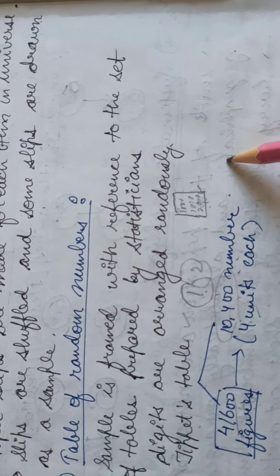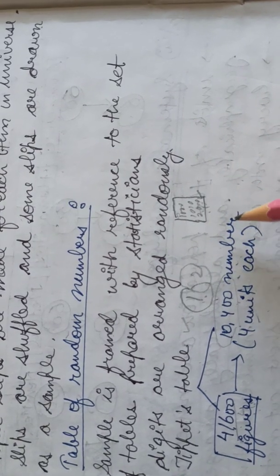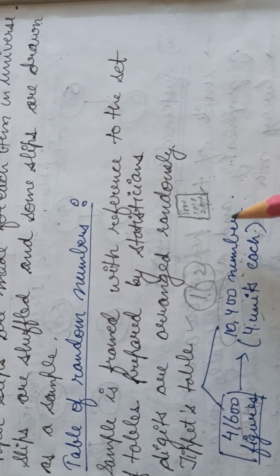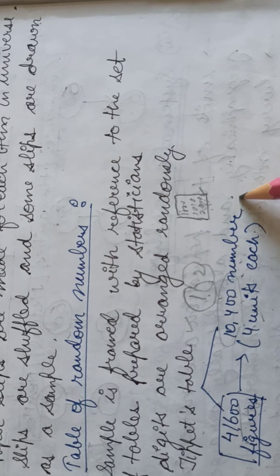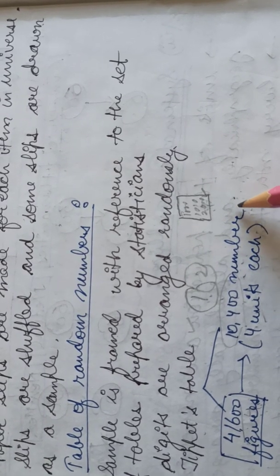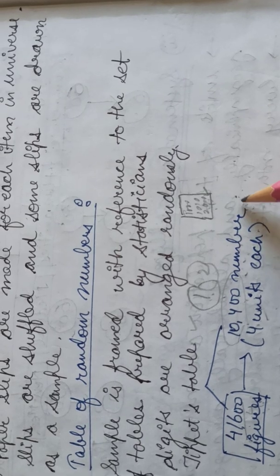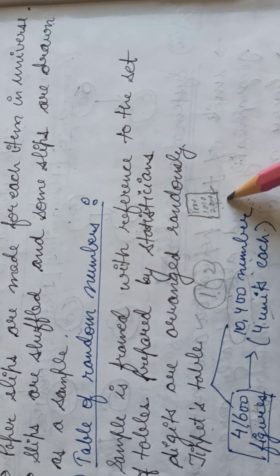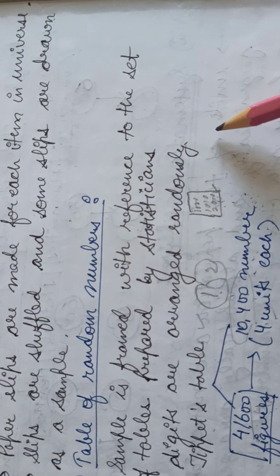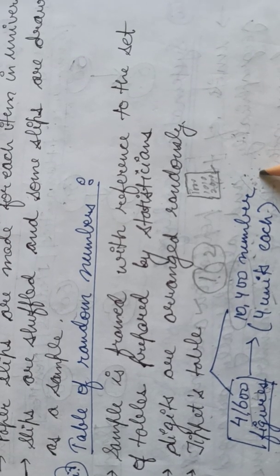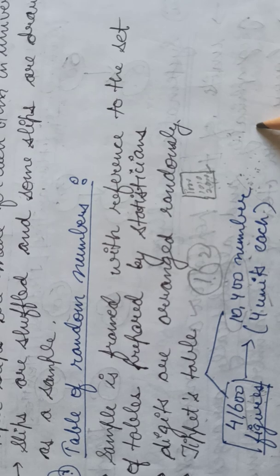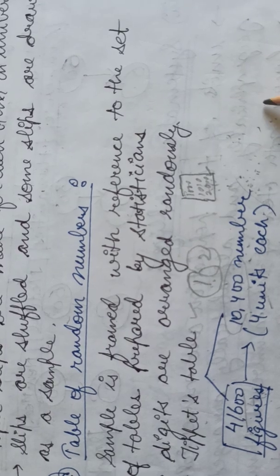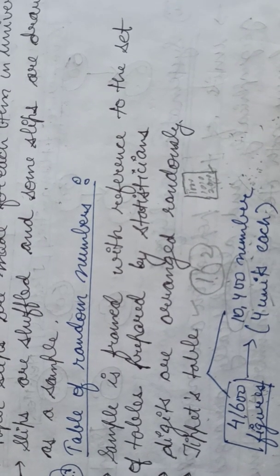This was all about random sampling, in which each and every item of the universe has an equal chance of being selected in the sample. Therefore, this method is also impartial. It is used when items of the universe are of homogeneous nature, and two methods come under it: the lottery method and the tables of random numbers. In the next video, we will study the methods under non-random sampling, which will cover five methods. Thank you so much.